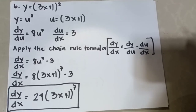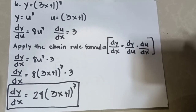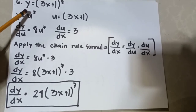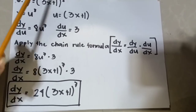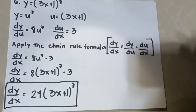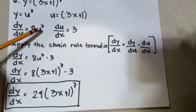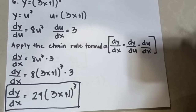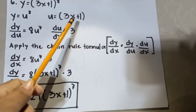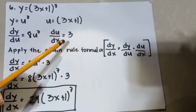Example number 6: y = (3x + 1)⁸. First, we identify the value of y and u. y = u⁸ as the outer function, while u = 3x + 1 as the inner function. The derivative of y with respect to u is 8u⁷, using the power rule. The derivative of u with respect to x is 3, since the derivative of 3x is 3 and the derivative of the constant 1 is 0.